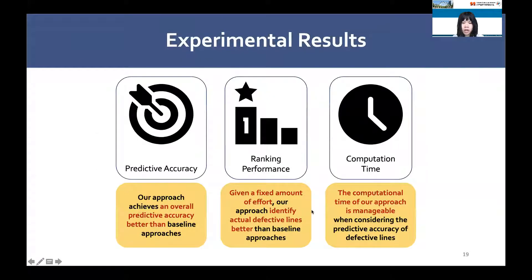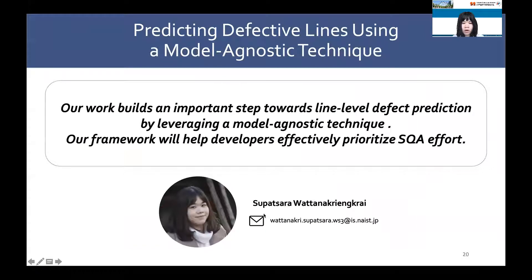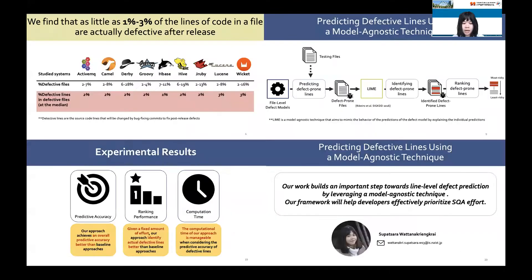In conclusion, our approach can effectively identify defective lines while requiring a smaller amount of SQA effort in terms of lines of code, with a manageable computation time. Therefore, we hope that our work builds an important step toward line-level defect prediction while leveraging a model-agnostic technique that can help developers effectively prioritize SQA effort. That's all about my presentation. Thank you for listening.